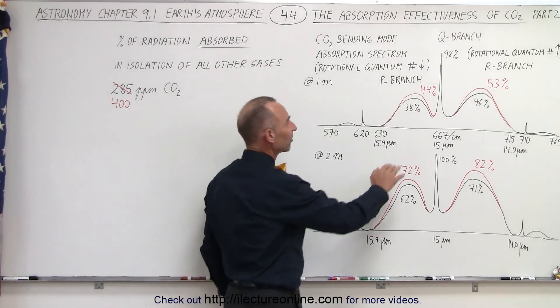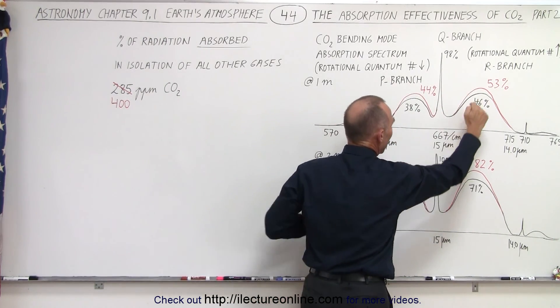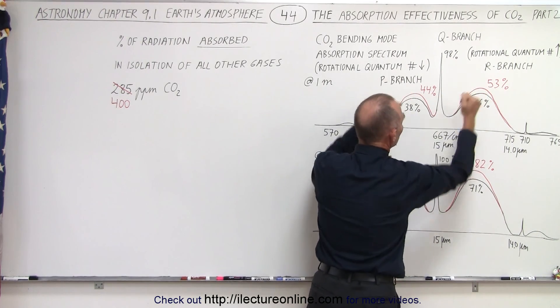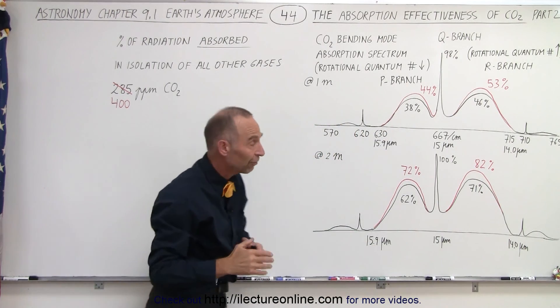We could see that the side lobes, the P branch and the R branch, were at 38 and 46 percent maximum at the peaks by the time you reach one meter and 62 and 71 percent by the time we have an elevation of two meters.